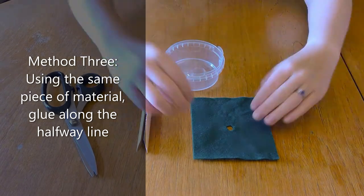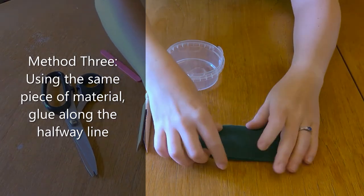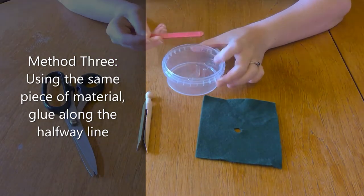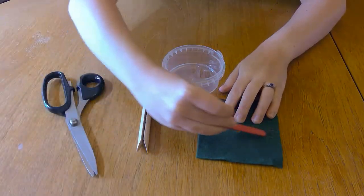Next I'm going to use the same piece of material with a hole in it and I'm going to glue along the halfway line. Now make sure you don't get any glue in the hole because you're going to need that later.